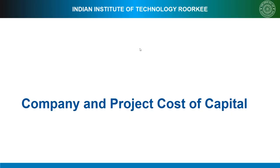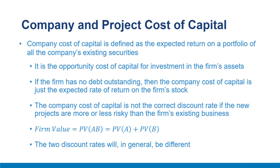The company cost of capital is defined as the expected return on a portfolio of all the company's existing securities. It is the opportunity cost of capital for investment in the firm's assets, and therefore the appropriate discount rate for the firm's average-risk projects. If the firm has no debt outstanding, the company cost of capital is simply the expected rate of return on the firm's stock. It is not the correct discount rate if new projects are more or less risky than the firm's existing business.